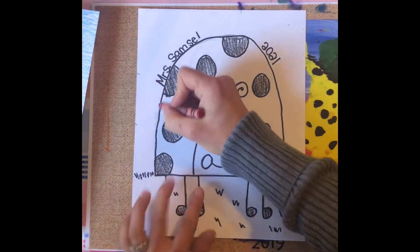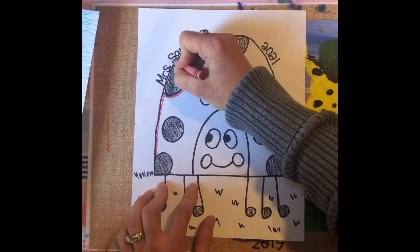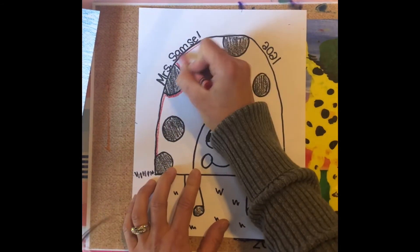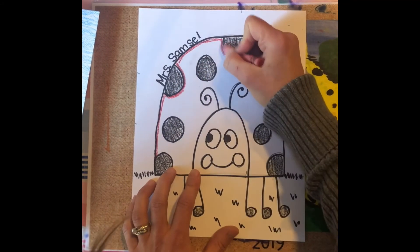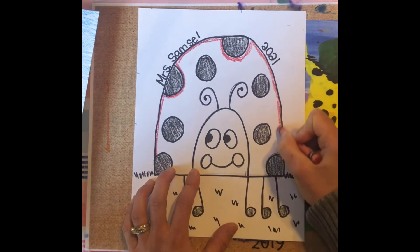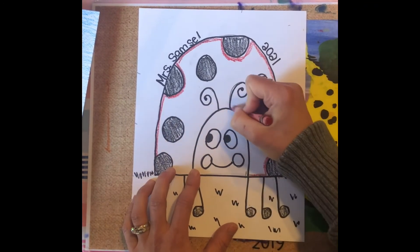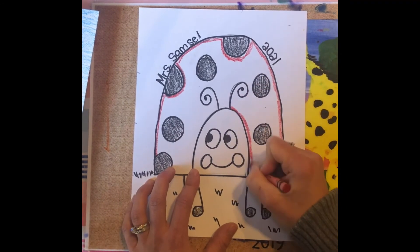So I always like to go and kind of outline, so I know what section I'm going to be coloring in. And it kind of reminds me, when I make this line, of a stop sign, so I know I have to stop and keep it all inside here.